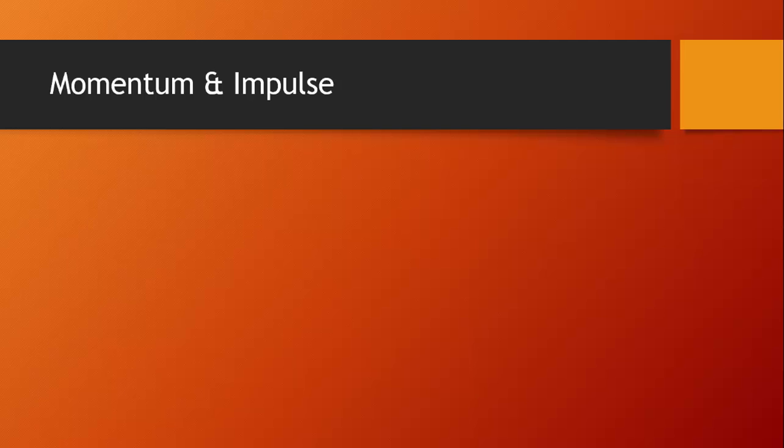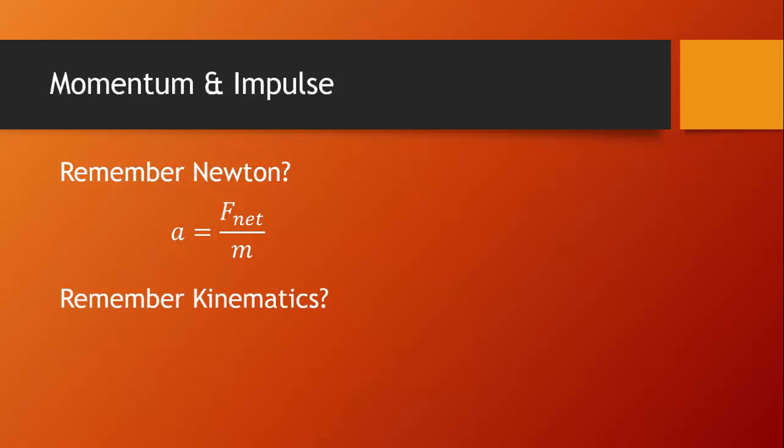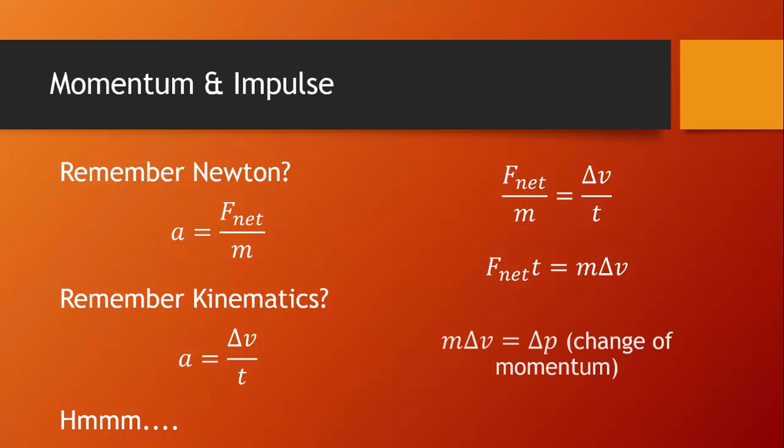Now I want to introduce this other term, impulse. You guys remember Newton? a equals f net over m. Remember when we did kinematics? a was delta v over t? Hmm. Both of those things equal a. Therefore, both of those things equal each other. And if we cross multiply, we'll get f net t equals m delta v. And both of these terms are very important. m delta v can also be called delta p, the change of momentum.